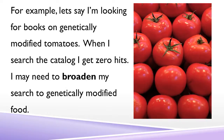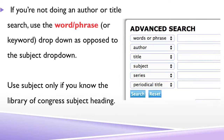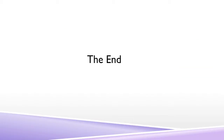For example, let's say I'm looking for books on genetically modified tomatoes. When I search the catalog, I get zero hits. I may need to broaden my search to genetically modified food. If you're not doing an author or title search, use the word phrase or keyword dropdown as opposed to the subject dropdown. Use subject only if you know the Library of Congress subject heading.